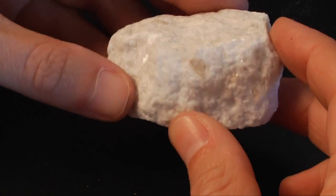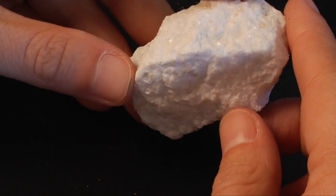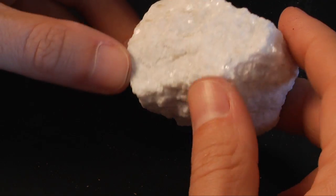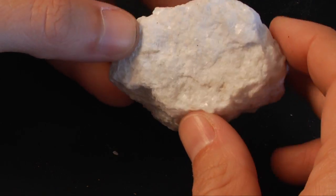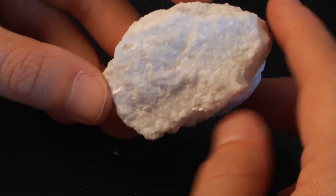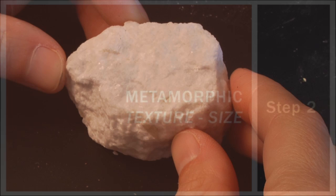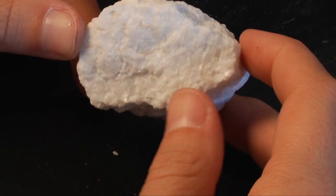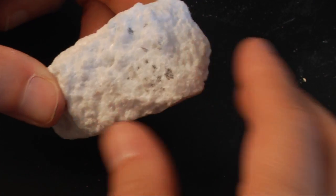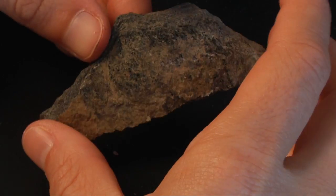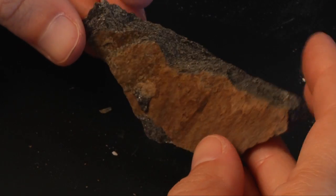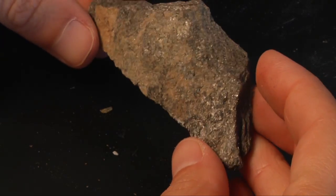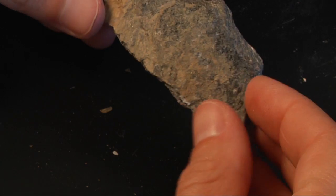If a sample is non-foliated, you won't see that parallel alignment — you'll just see a random arrangement of mineral grains in your sample, with no arrangement whatsoever. The next step is to take a look at the texture or grain size. If you can see the minerals, then you know you have a coarse-grained rock. If you can just barely see the minerals — maybe a little bit of a sparkle in there — then you know you've got a fine-grained rock.